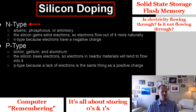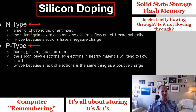They can create negatively charged silicon called n-type, which has a negative charge, and positively charged silicon called p-type, which has a positive charge. To create n-type silicon, certain substances are added that give extra electrons to the silicon. Since electrons have a negative charge, n-type has extra electrons and a negative charge.